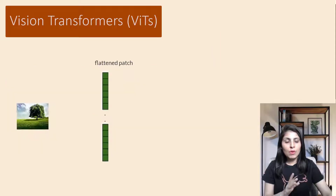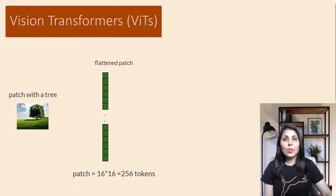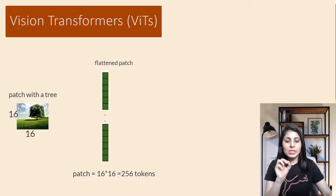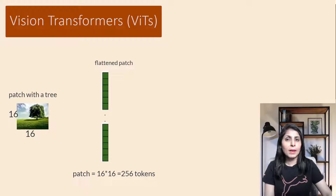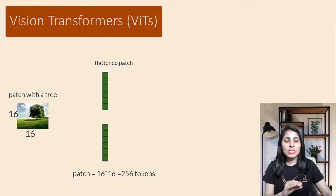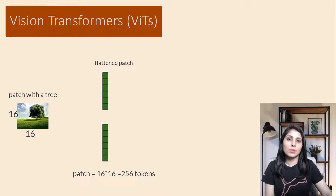To do this we flatten the patch. For example, if the patch is a 16×16 square, we can think of it as a sequence of 256 tokens (16×16 = 256). Each token represents a specific part of the patch, like a pixel. So with a patch size of 16×16, there are 256 tokens, each representing a pixel or smaller section of the patch. These tokenized patches are then served as input to the transformer model, allowing it to process and understand different parts of the image separately.